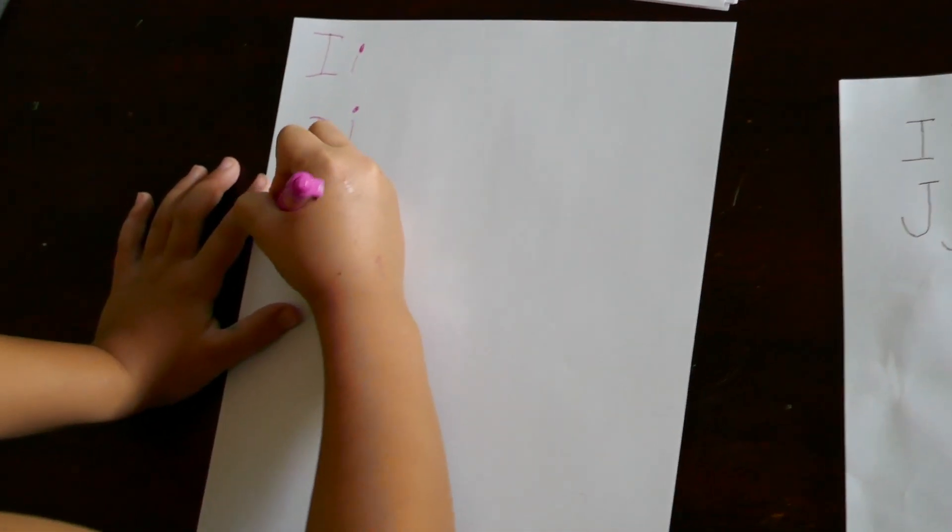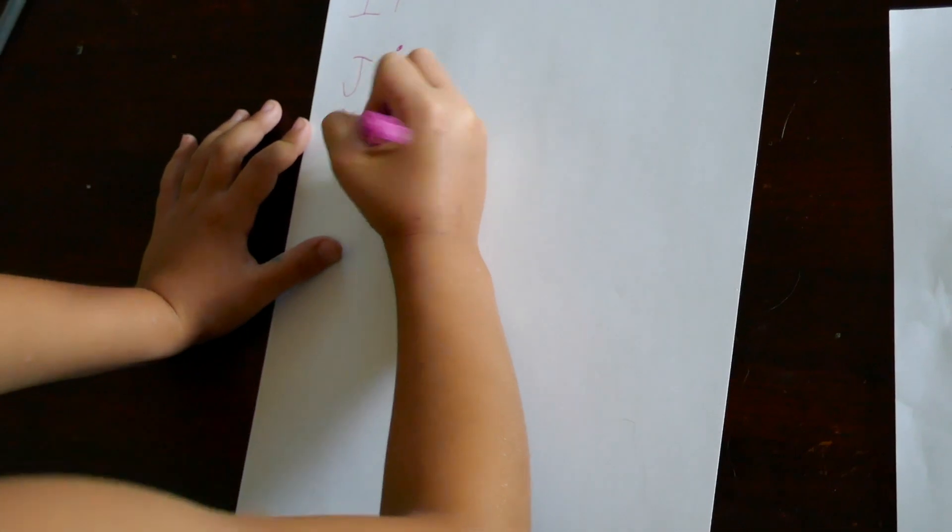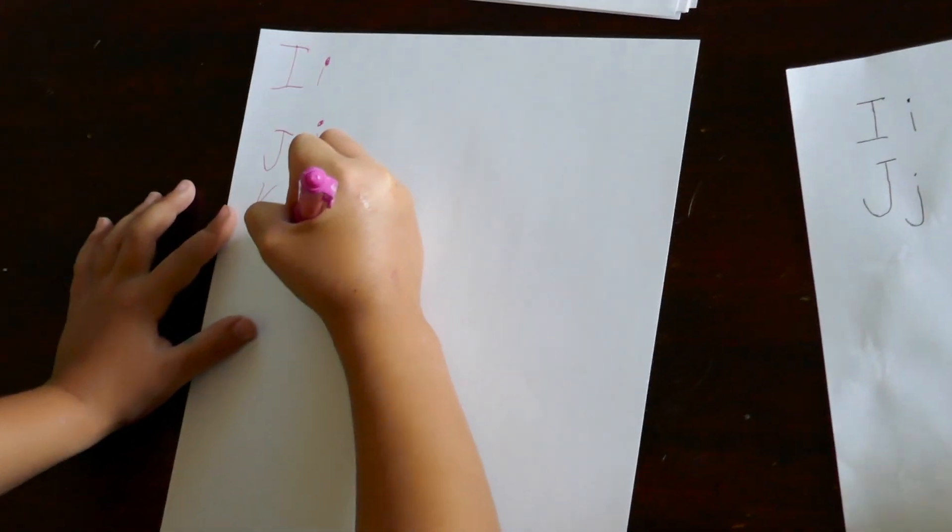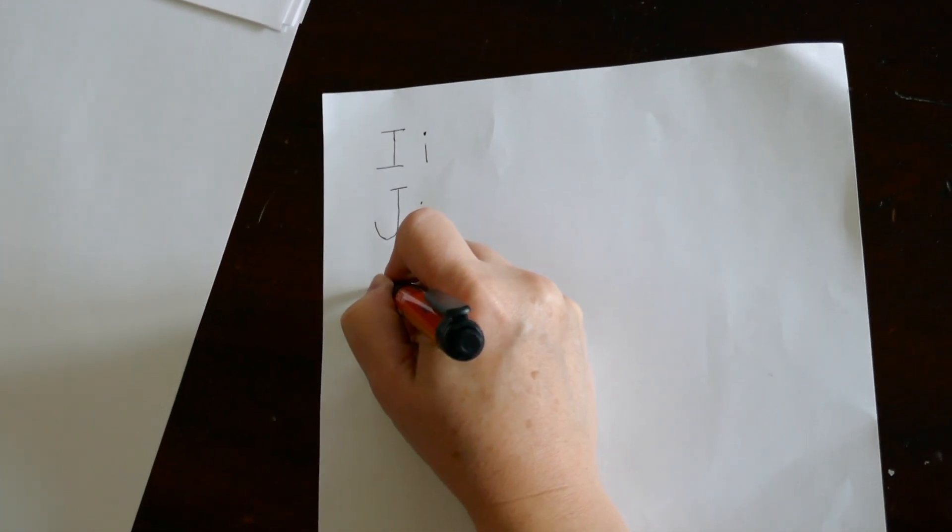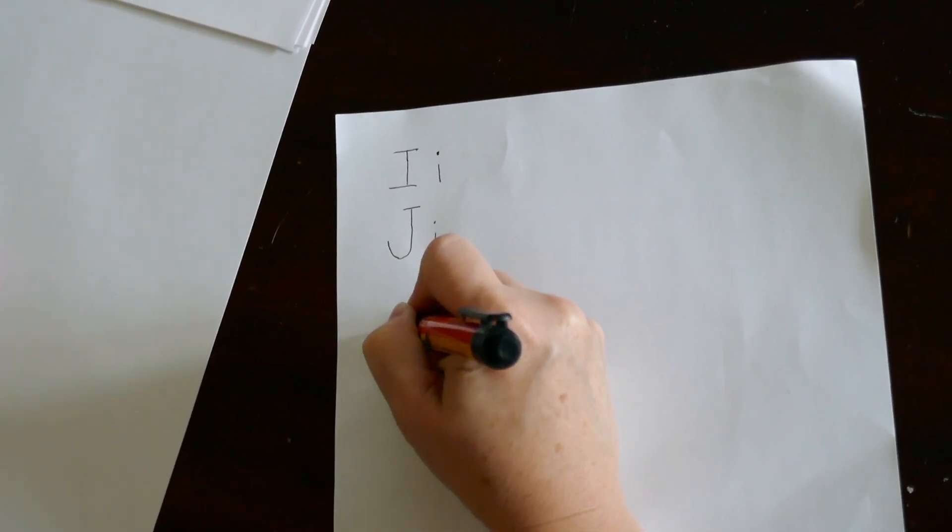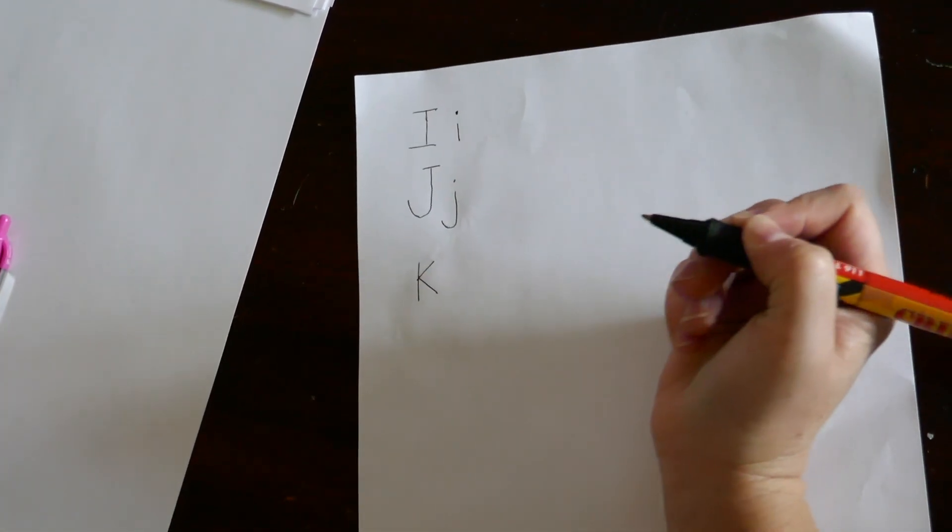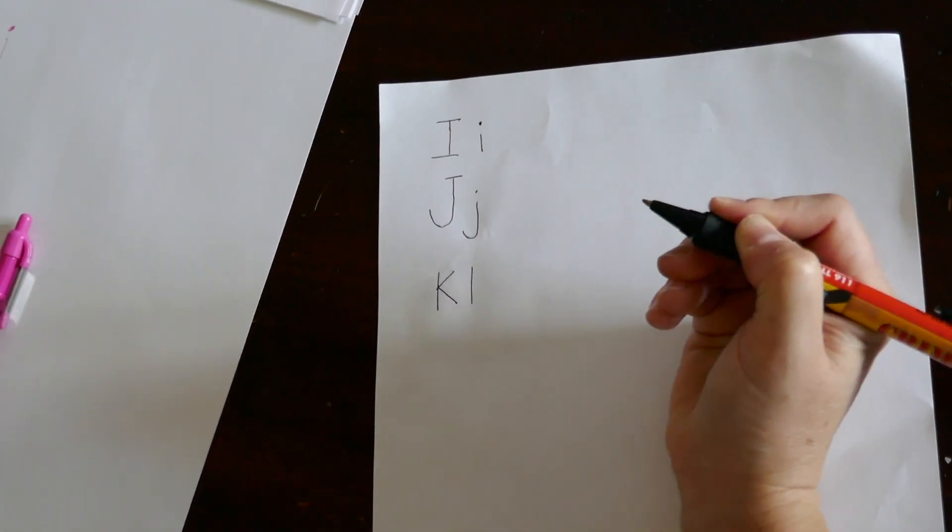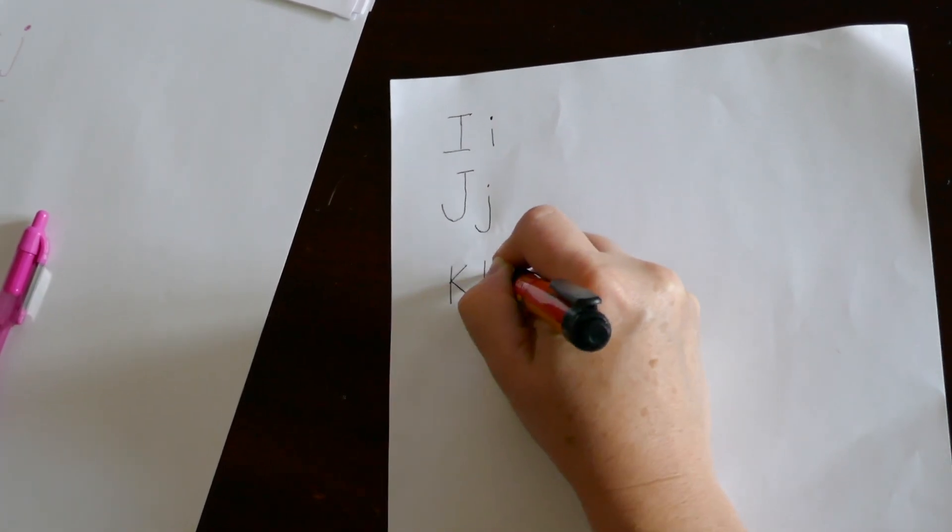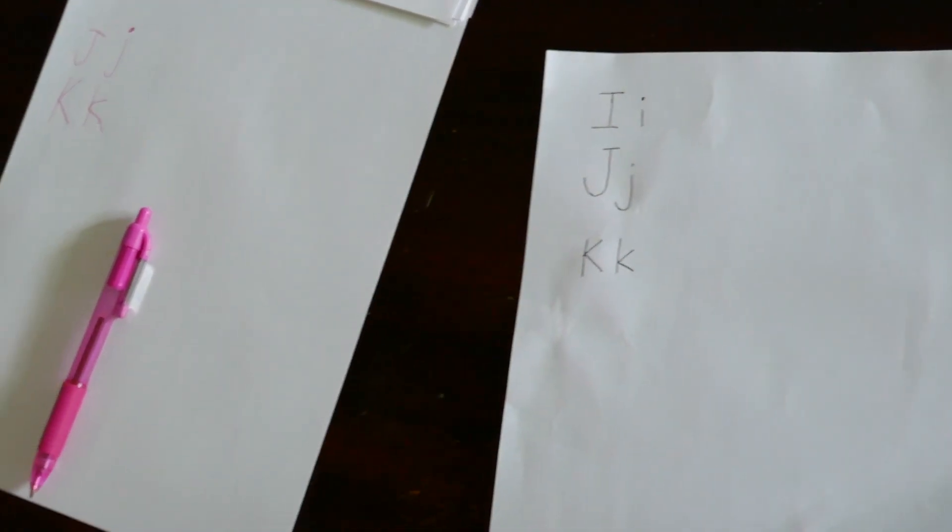What comes next after J? K. Very good. So the Ks look exactly the same, only one is bigger than the other. So K, we're going to do a line down with one line coming out at an angle, and another line coming out at an angle. And the lowercase k is going to have the same line going down, but the angled lines are at the bottom rather than in the center.